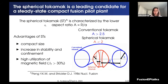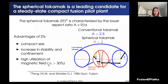Spherical tokamaks are tokamaks with a low aspect ratio, which is a measure of the major plasma radius to the minor radius. It has been discovered that spherical tokamaks have several advantages compared to conventional machines: compact size, increased stability and confinement, and better utilization of the magnetic field, measured as the ratio of plasma pressure to magnetic pressure — the beta parameter. All of these advantages make spherical tokamaks a leading candidate for the steady-state compact fusion pilot plant.